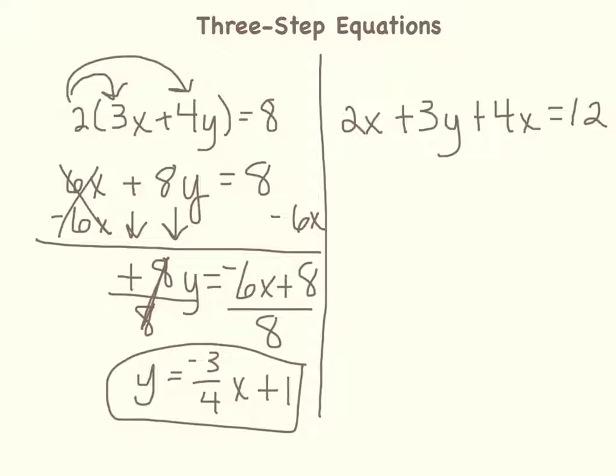Now, let's look at the other example of a three-step equation. In this example, I have three terms on the left side of the equation. And if you notice, I have two x terms. So because those terms are considered like terms, my first step will be to combine those terms.